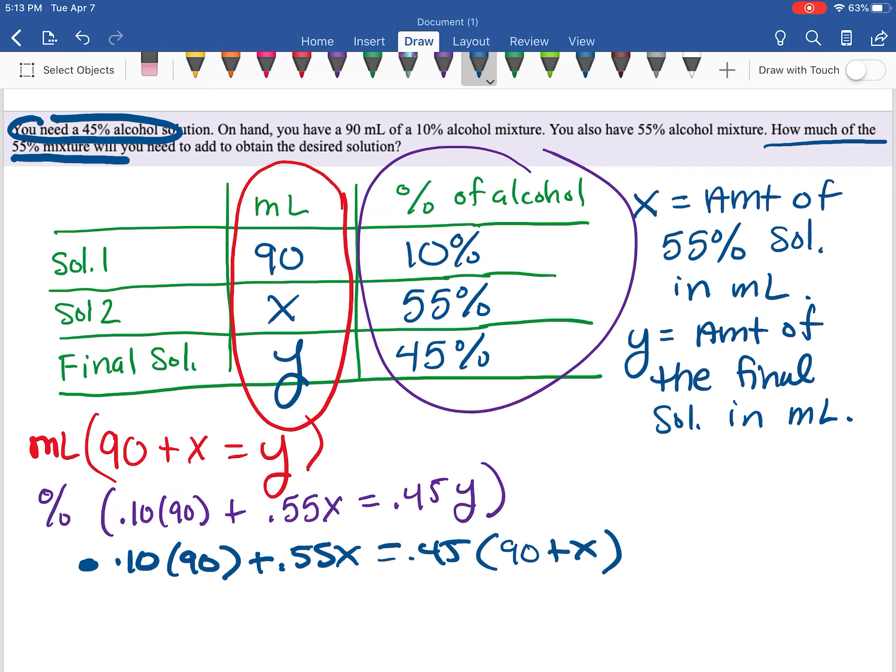And now I have one equation that I can solve for x. So when I multiply 0.10 times 90, that gives me 9.